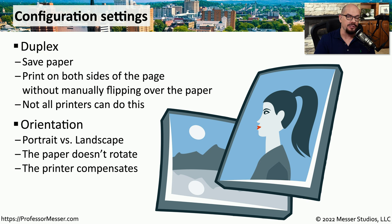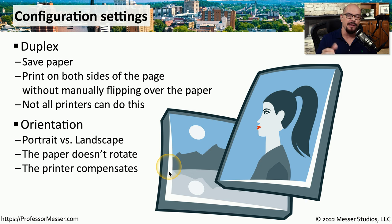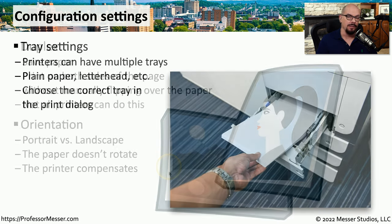Another option is to choose between printing in portrait mode or landscape mode. In portrait mode, the page is longer from top to bottom. In landscape mode, it's turned on its side and is longer from left to right. The paper itself isn't rotating — instead, the printer is choosing how to print to that paper based on whether you set it to portrait or landscape.